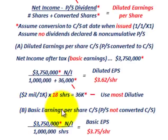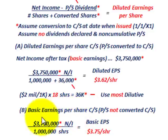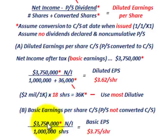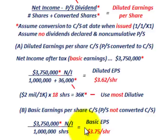For basic EPS for preferred stock — where preferred stock is not converted into common stock — we simply take net income after tax of $3,750,000 and divide by 1 million shares outstanding. No additional shares were issued, so basic EPS is $3.75.